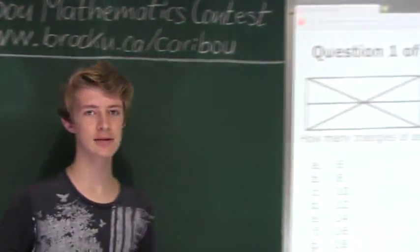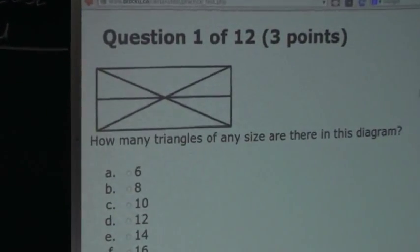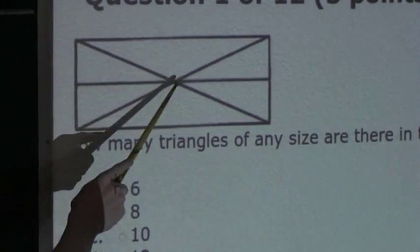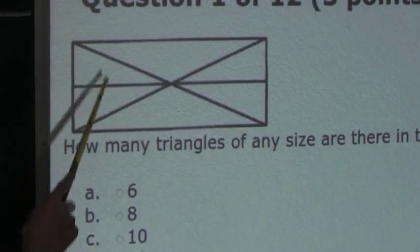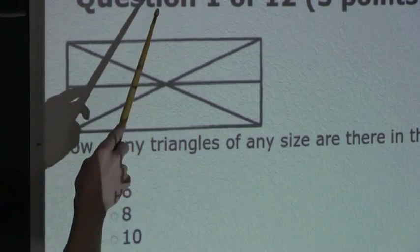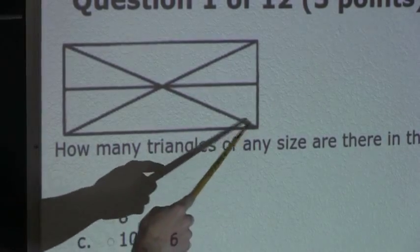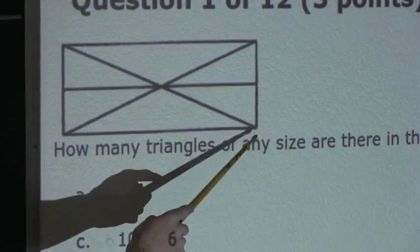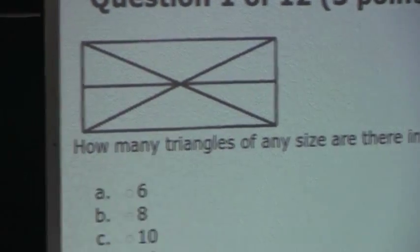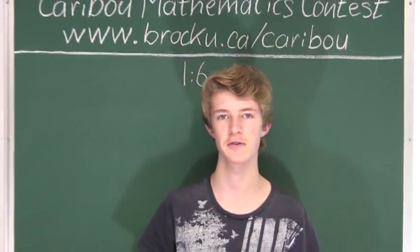Now let's look at all the triangles that consist of two single triangles. So that would be this triangle, which consists of these two triangles. And since the diagram is symmetrical, we know that also this triangle, which consists of these two triangles. So we know that there are two triangles that consist of two single triangles.